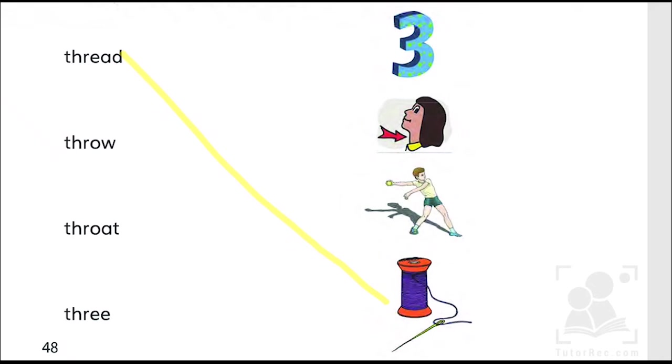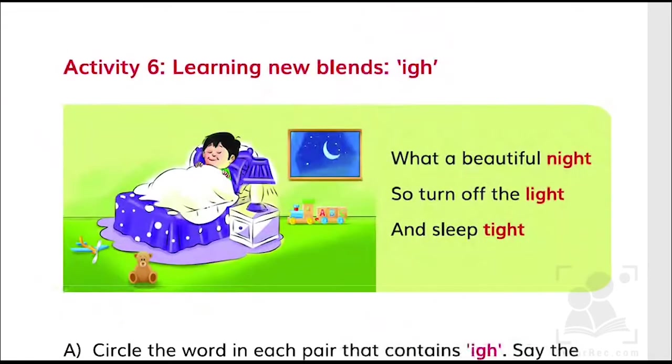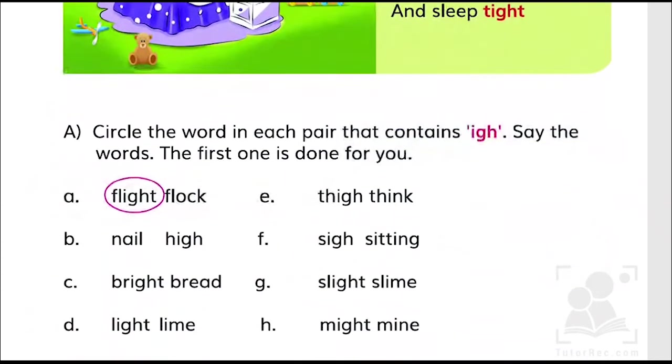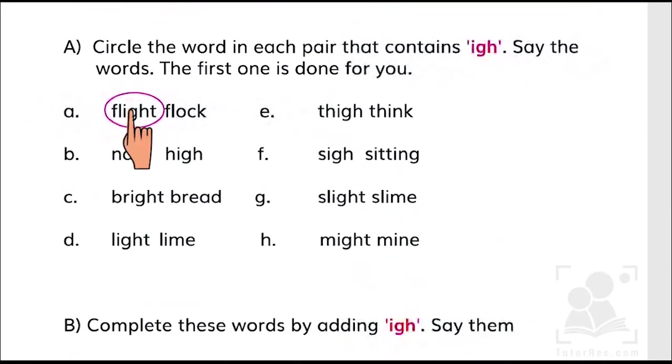Let's move to the next page. Now we have another activity of new words such as IGH. 'What a beautiful night, so turn off the light and sleep tight.' So we see 'light' is basically the sound. Now we have to circle the words such as flight, high, bright, light, tie, sigh, slight, might.